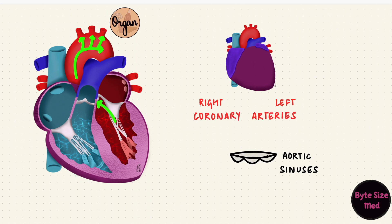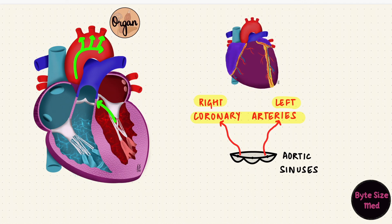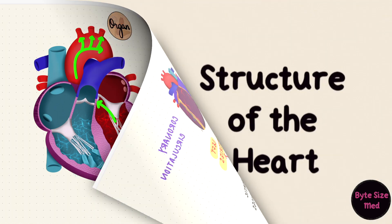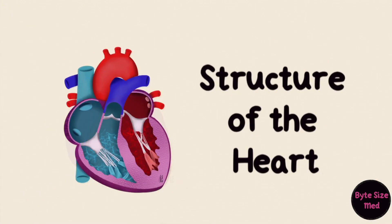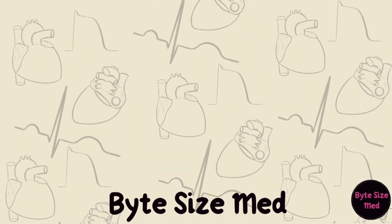From the right and left aortic sinuses, two vessels arise — the right and left coronary arteries. When blood fills the pockets after the ventricle contracts, it gets forced into the coronary arteries, forming coronary circulation. And I'll go over that in part 3 when we look at the blood supply of the heart. And that's what's inside the heart. I hope this video helped you. If it did, you can give it a like and subscribe to my channel for more. Thanks for watching and I'll see you in the next one.